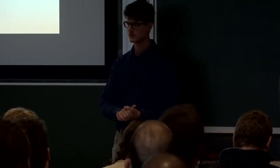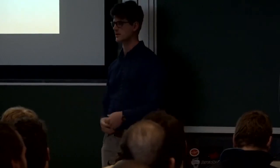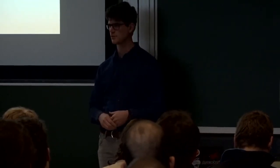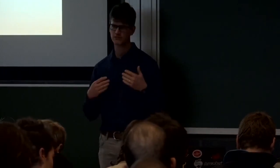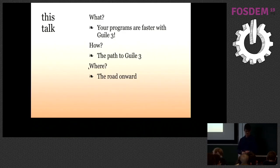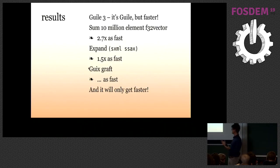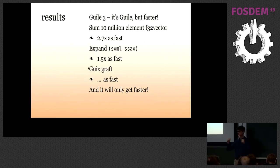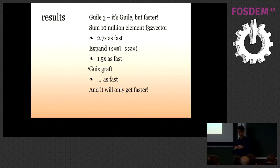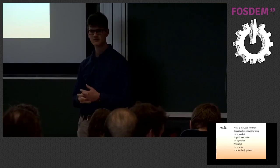GUILE 3 is an upcoming new major release. Right now we're at GUILE 2.2 — it's the next incremental step. It's essentially source compatible; your programs will run in the same way, only faster. If you're summing a 10 million element vector of packed floats, it runs 2.7 times as fast as GUILE 2.2. For a less computational task like running the macro expander on an SSAX source file, it's about one and a half times as fast.